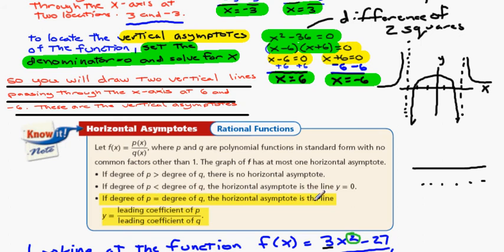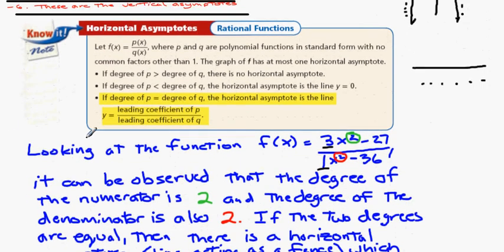But if the degree of p is equal to the degree of q, the horizontal asymptote then is going to be a horizontal line crossing the y-axis as a ratio of the leading coefficients of p and q. So let's look at our particular example.